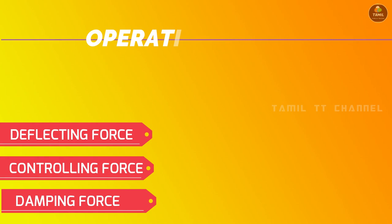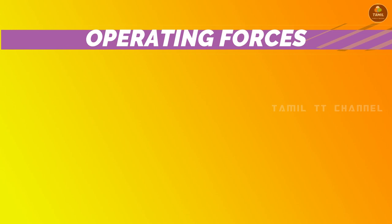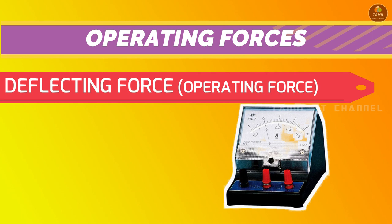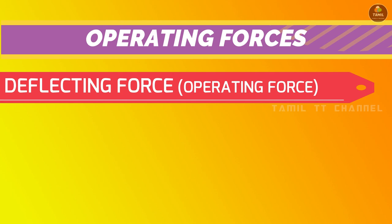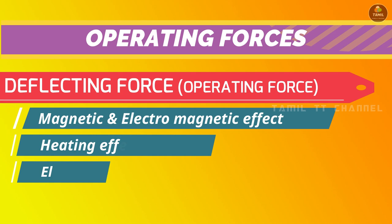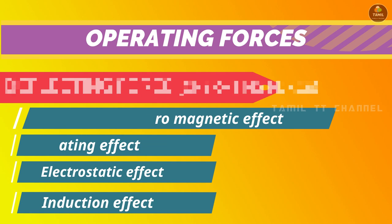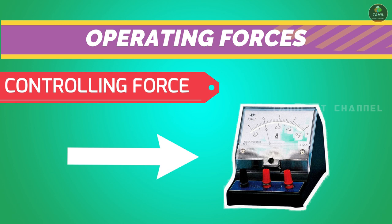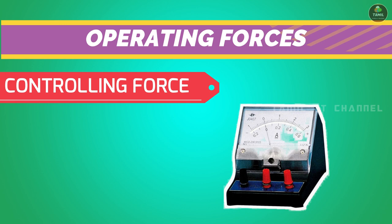Now we will see the three types of operating forces. The first is deflecting force. Deflecting force causes the pointer to move in a particular direction. It is produced by four effects: magnetic and electromagnetic effect, heating effect, electrostatic effect, and induction effect. The second is controlling force, which opposes the deflecting force and brings the pointer back to zero. The controlling torque equals the deflecting torque at the rest position.